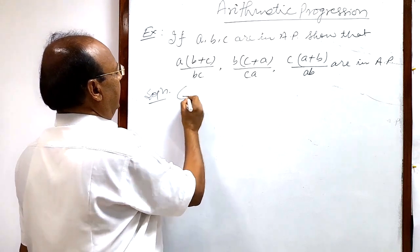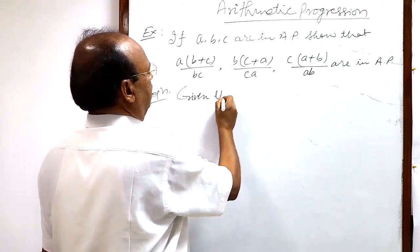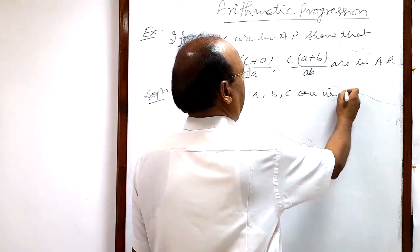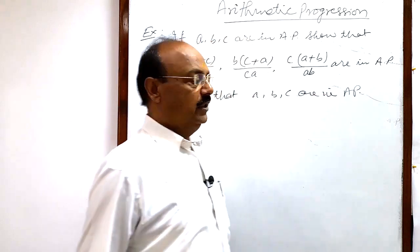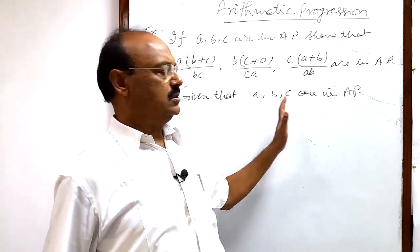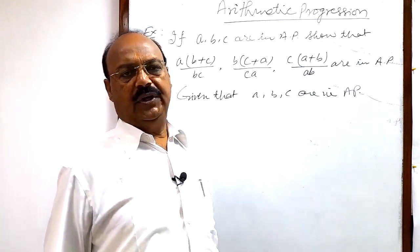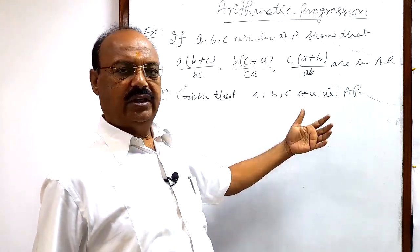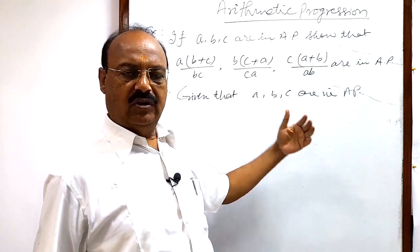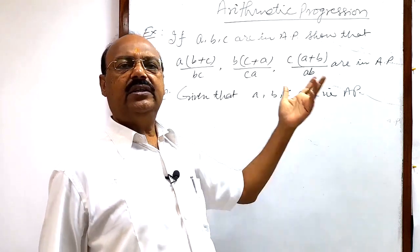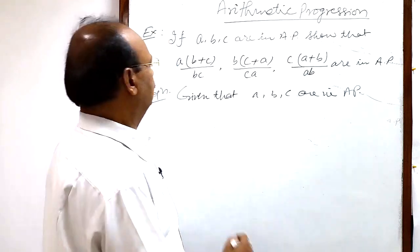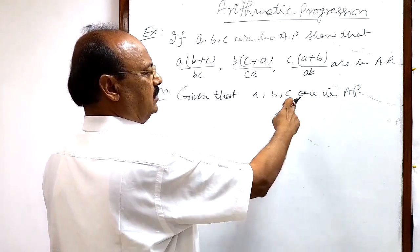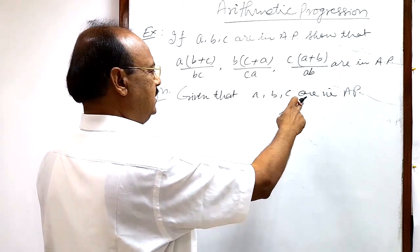Here, given that A, B, C are in A.P. You know that if any numbers are given in A.P., and if we multiply or divide these numbers with some constant, they will remain in A.P. So first of all, we will divide these numbers by A, B, C.